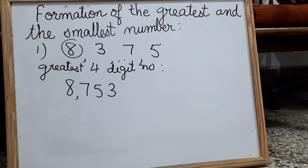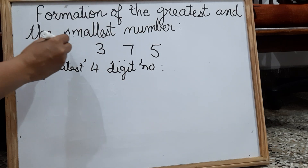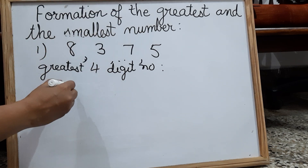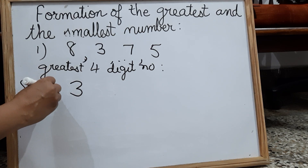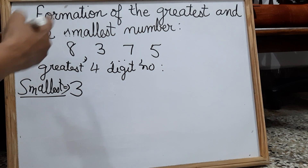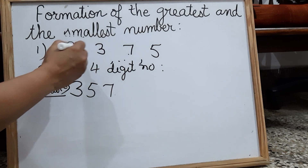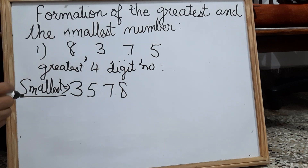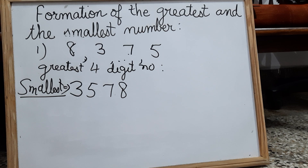Now what about the smallest number? Same rule: start with the smallest digit. Out of these four digits — eight, three, seven, and five — the smallest digit is three. So we will start with three. Next is five, then seven, and then eight. So it became three thousand five hundred and seventy-eight — 3578. This is the smallest four digit number.